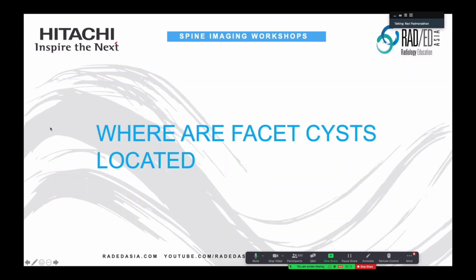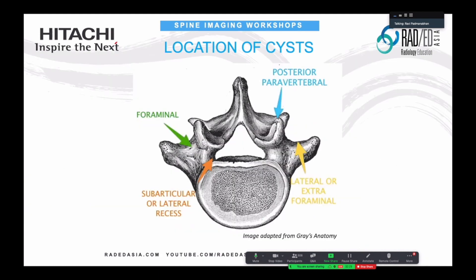So where do you get cysts? Cysts are basically due to degeneration of the joint, and you end up with synovial cysts. There is often a connection between the cyst and the joint. If we look at this image, we can see a number of locations where the cyst from the facet joint can go.